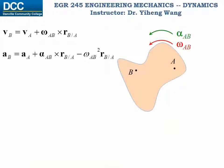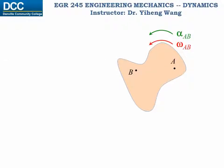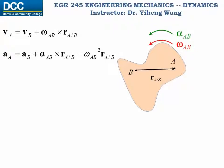Remember, you can write these two equations for any two arbitrary points that belong to the same rigid body undergoing general plane motion. When writing these equations, you always choose a reference point — in our case, point A is the reference point — and the relative position vector is always drawn from the reference point, representing the relative position of point B with respect to A. On the other hand, if we choose point B as the reference point, we draw the position vector from B to A and write equations to find the velocity and acceleration of particle A.